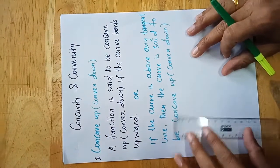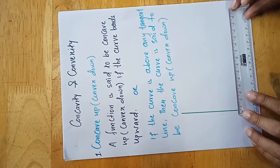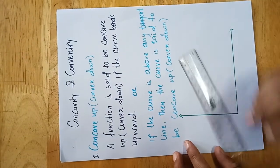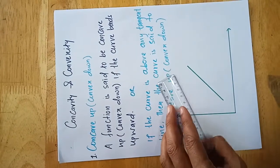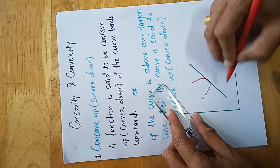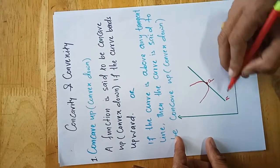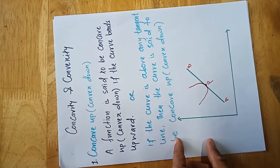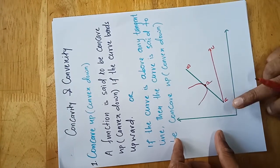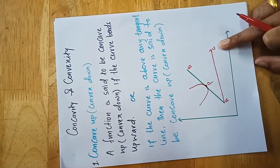Let's see this with a geometrical figure. On a graph with x and y axes, if you draw a tangent line — say line AB — and the curve is lying above it in the form of an upward parabola, with point P on the curve, then that kind of curve is known as concave up. For any tangent line AC, the curve lying above the tangent line is called concave up or convex down.